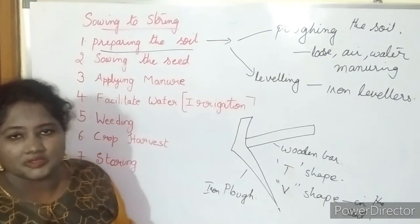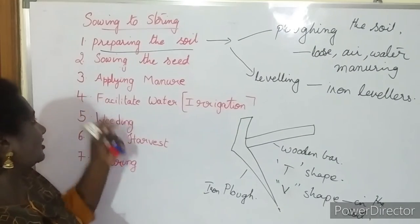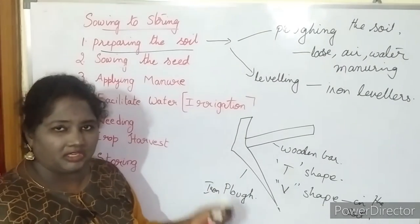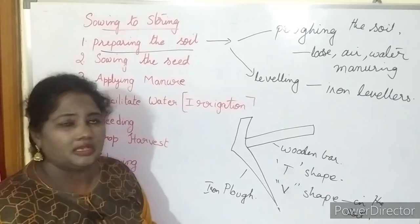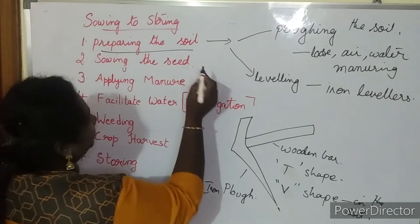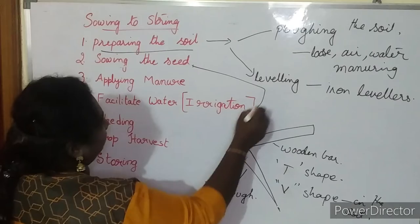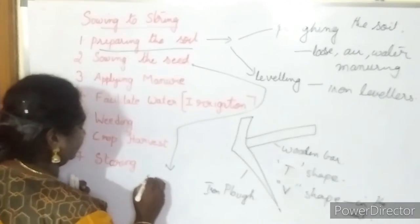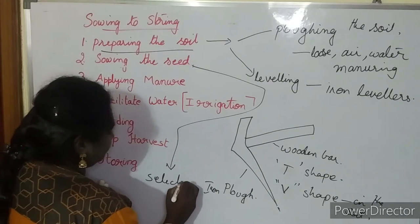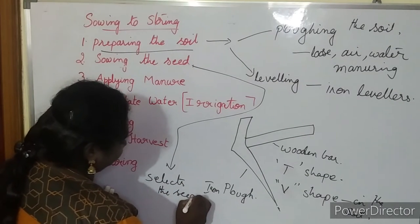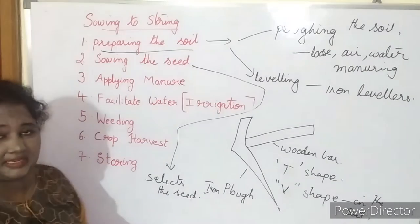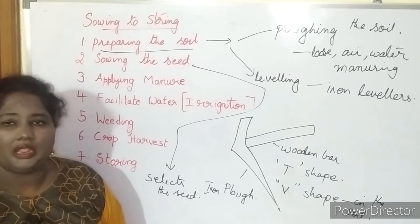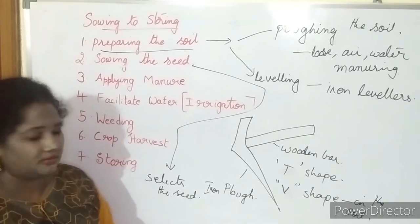The second step is sowing the seeds. Once the soil is prepared, the farmer waters the field and sows the seeds. In sowing the seeds, there are a few more steps. First, he selects the seeds. The seed must contain three characters: the seed must be wrinkle-free, round, and must have more weight.